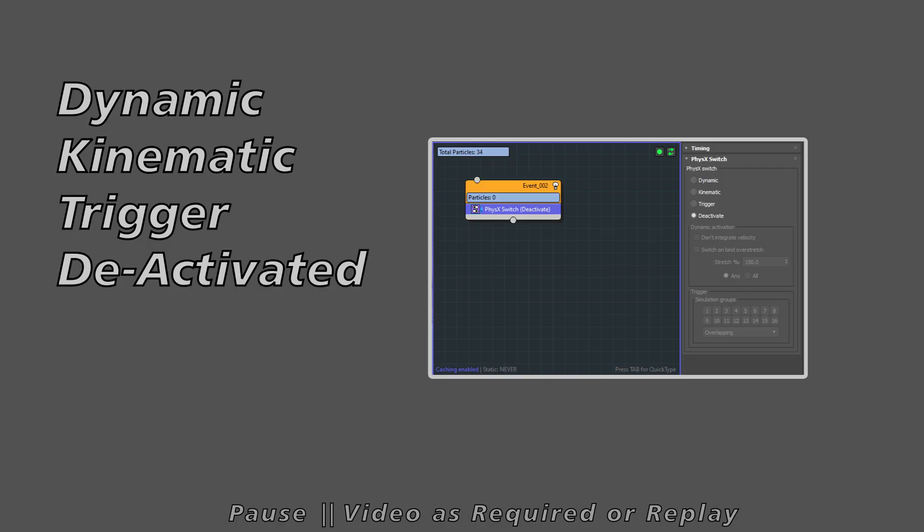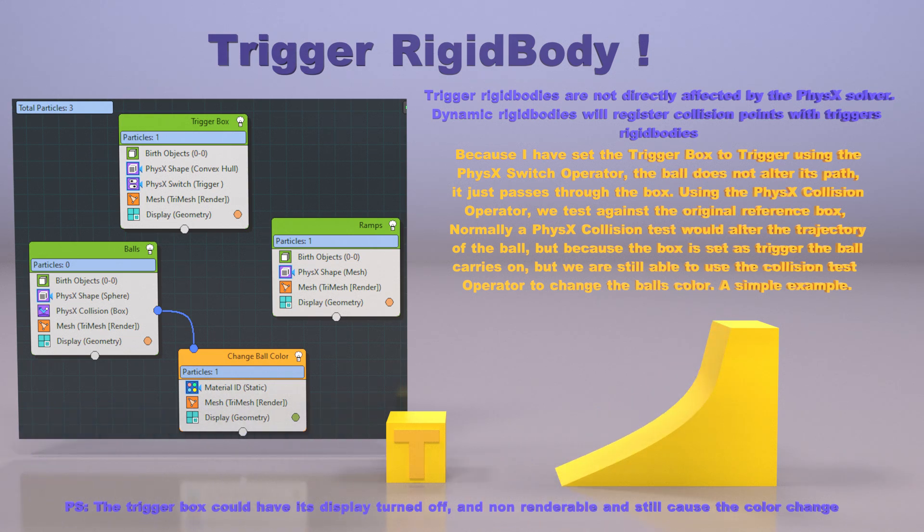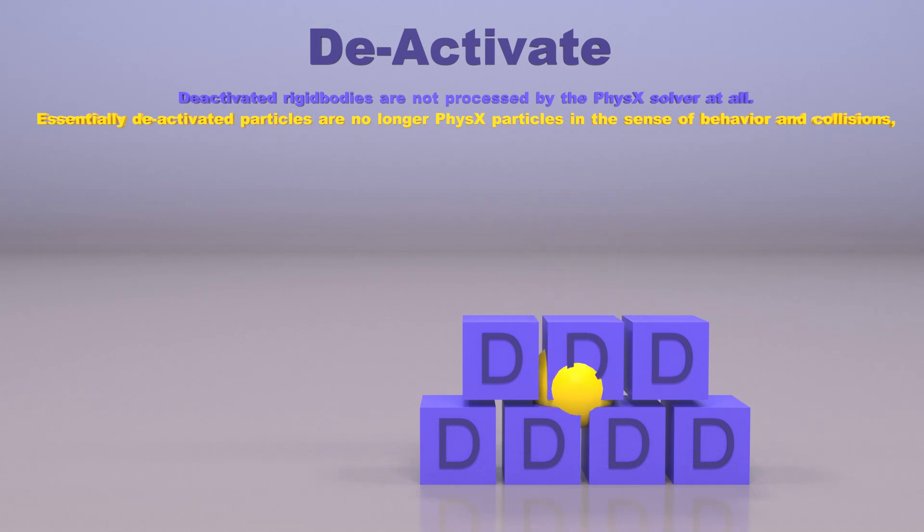Dynamic, Kinematic, Trigger, Deactivator. These are rigid body types and here we just take a quick look at the usage of each one of those body types.